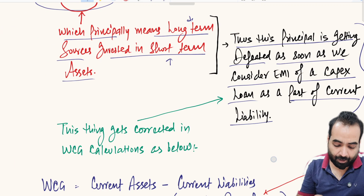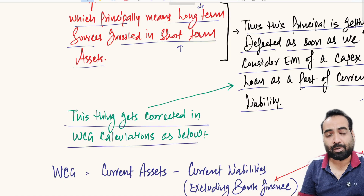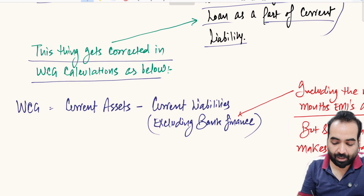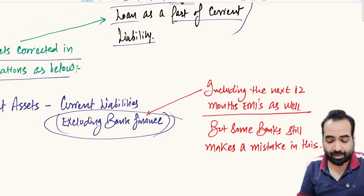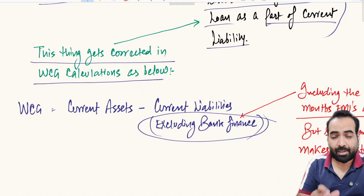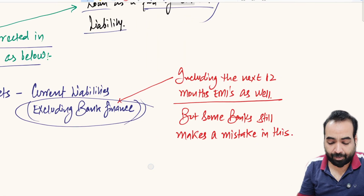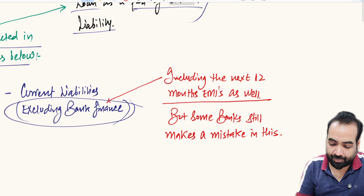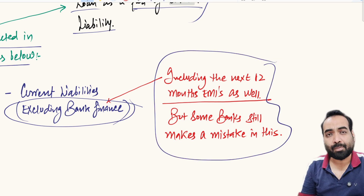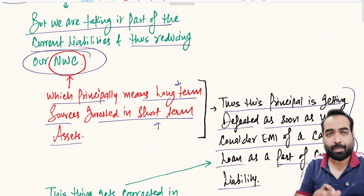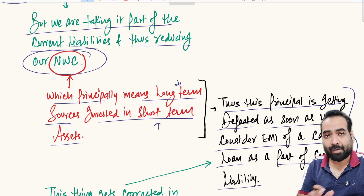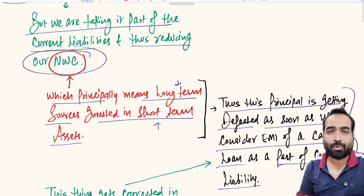This issue gets corrected automatically in WCG — Working Capital Gap — calculations, because in WCG we exclude all types of bank finance from current liabilities. That is why banks trust WCG calculations more than NWC. This is the basic principal mistake found in NWC calculation. I would love to see your opinions in the comment box. See you in the next video, thank you very much.